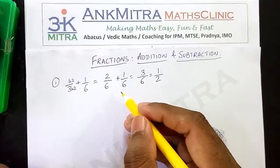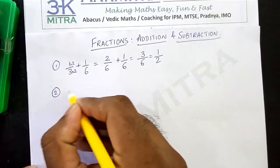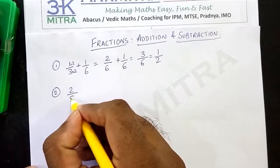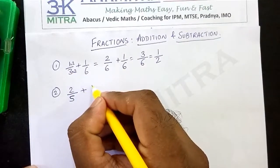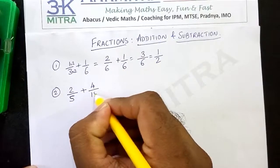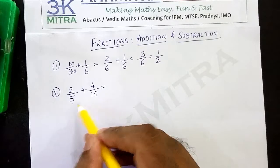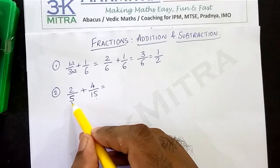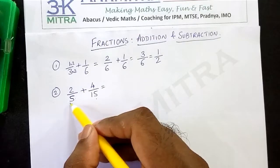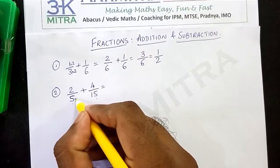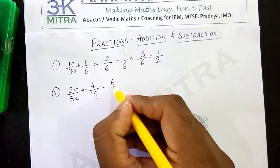Now let us look at another example with slightly larger numbers. Let us say 2 upon 5 plus 4 upon 15. Again in this case, we will first check the denominators. The denominators are 5 and 15. We already know that 5 three times is 15. So we can multiply both the numerator and denominator by 3 and we will get the denominator as 15 in both fractions. Multiplying by 3 for both numerator and denominator, we get the first fraction as 6 upon 15.